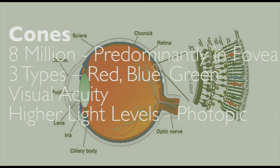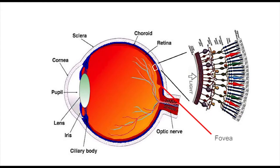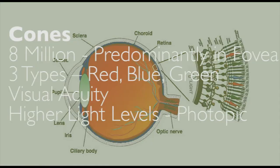In order to see tasks in what's called foveal vision, we need to use our cones. Our cones are situated predominantly in the fovea — this area right here. There are about eight million cones, and they have varying sensitivities in blue, red, and green — the primary colors of light. Cones are responsible for seeing in great detail as well as color, and they need a little bit more light than the rods in order to function.